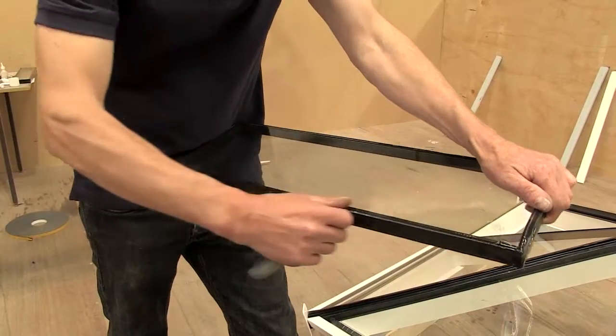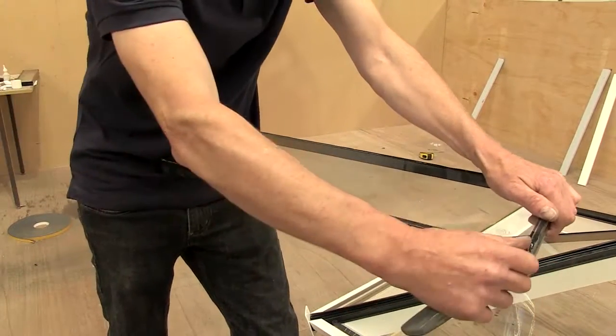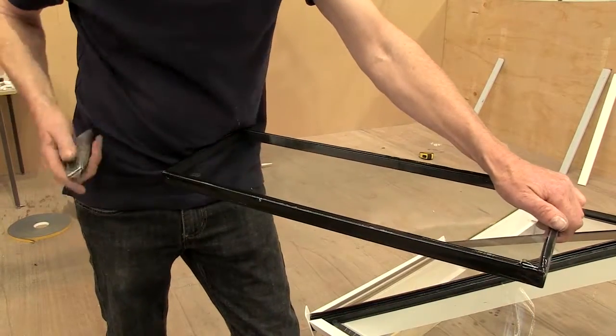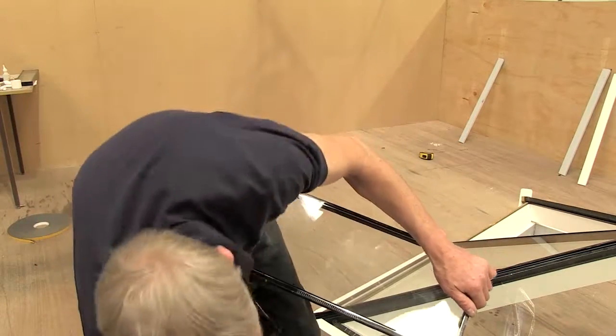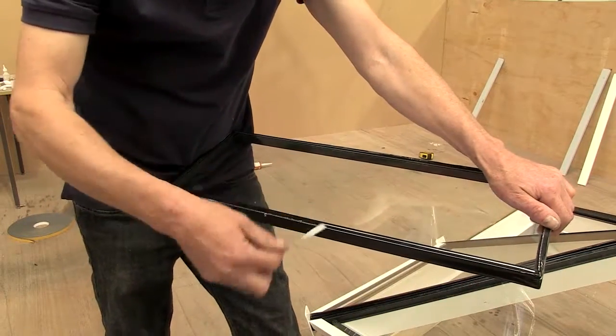When fitting roof vents, always remove foiled or plastic tape from the surface of the unit before sealing. Remember to clear both sides and always use the correct sealant.